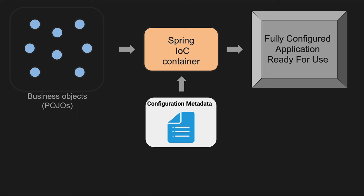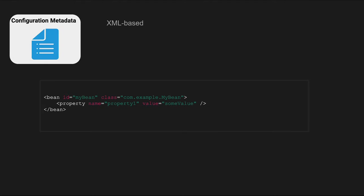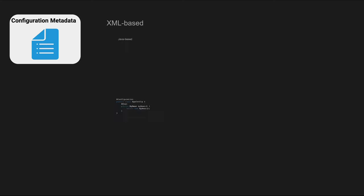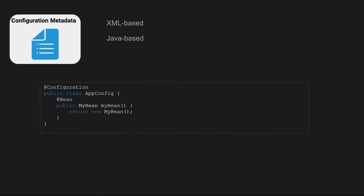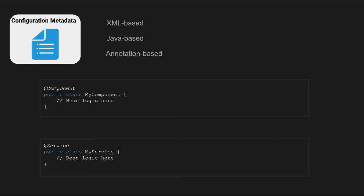Spring IoC manages the lifecycle of beans based on the configuration provided, which can be done in different ways. It's often specified using XML configuration, where we can specify the class and properties for a bean, or Java-based configuration, which involves using @Configuration-annotated classes and declaring beans using @Bean-annotated methods. Also, specific annotations like @Component, @Service, @Repository, and @Controller can be used to mark classes as beans.